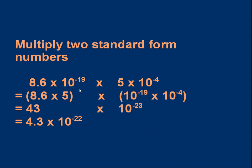Let's take 8.6×10⁻¹⁹ and multiply it by 5×10⁻⁴. The convenient way is to group the two mantissas together — 8.6 times 5 — and multiply that by the product of the powers of 10: 10⁻¹⁹ times 10⁻⁴. So 8.6×5 is 43, and minus 19 plus minus 4 is minus 23, so the power of 10 is minus 23.